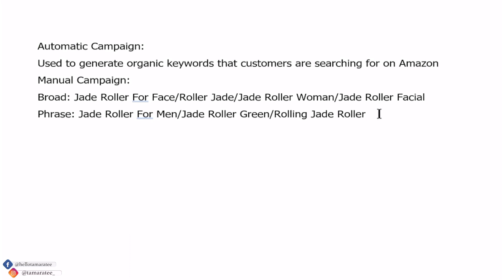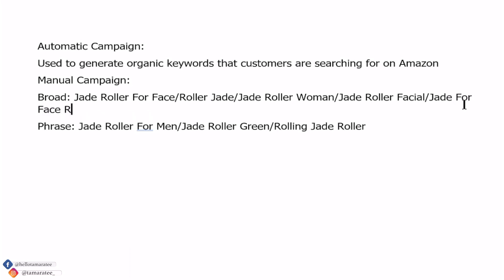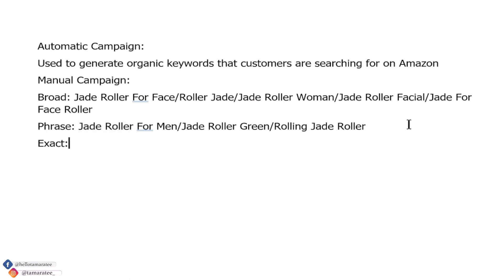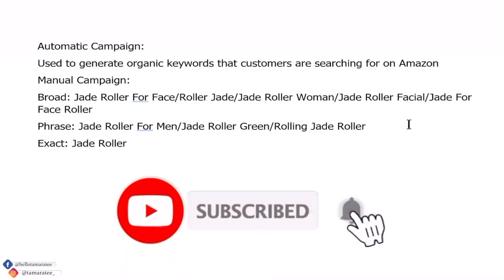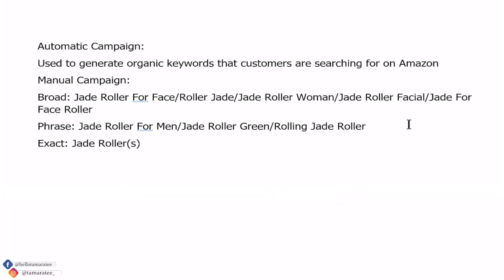The difference between broad and phrase is that broad is more loosely matched — for example, 'jade for face' where 'jade roller' doesn't have to be together — whereas in a phrase campaign, 'jade roller' has to stay together. Exact match type keywords are exactly that keyword. If I run a manual exact match campaign, I will get just 'jade roller' and nothing else — no broad keywords, no phrase keywords.